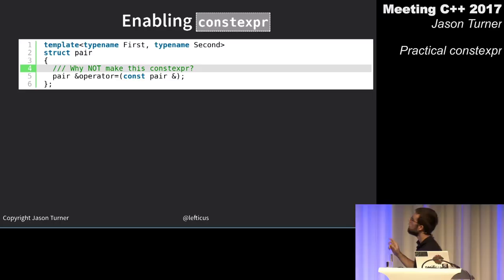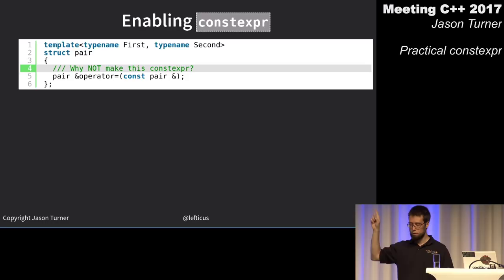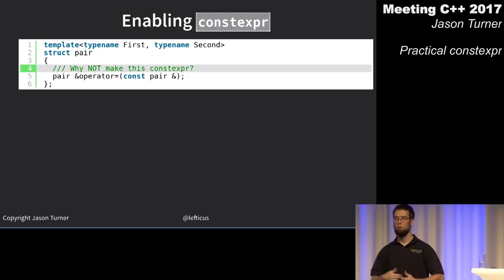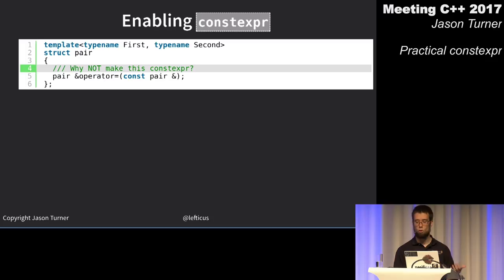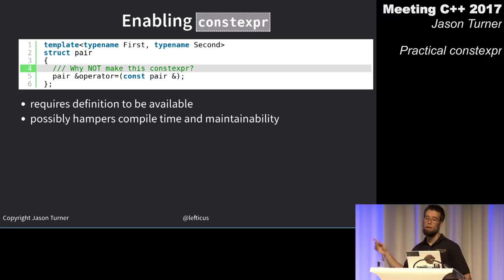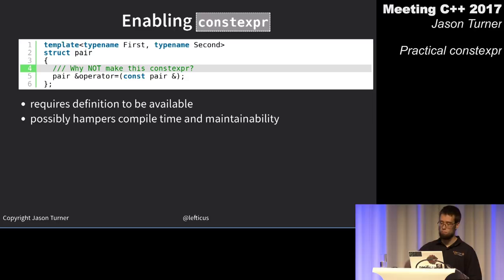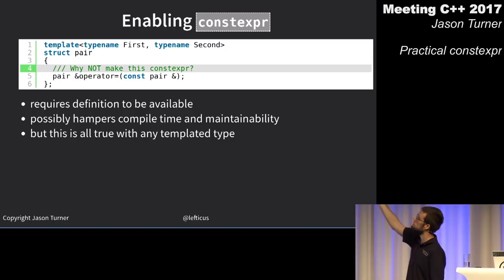Why not make operator= in pair constexpr? constexpr implies inline, requiring the definition to be available — but for a template type like pair, that's already true, so there's no additional cost.